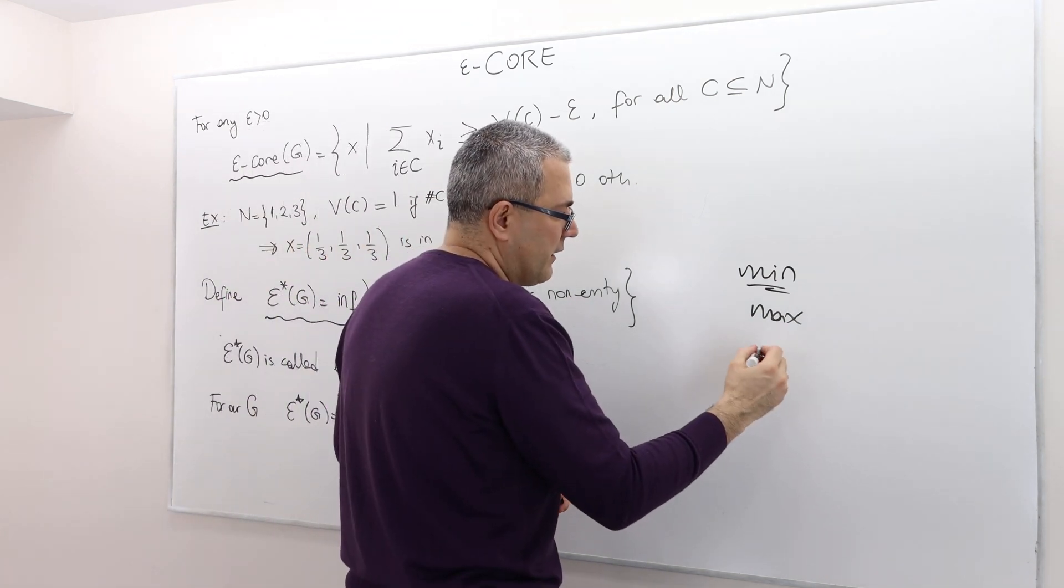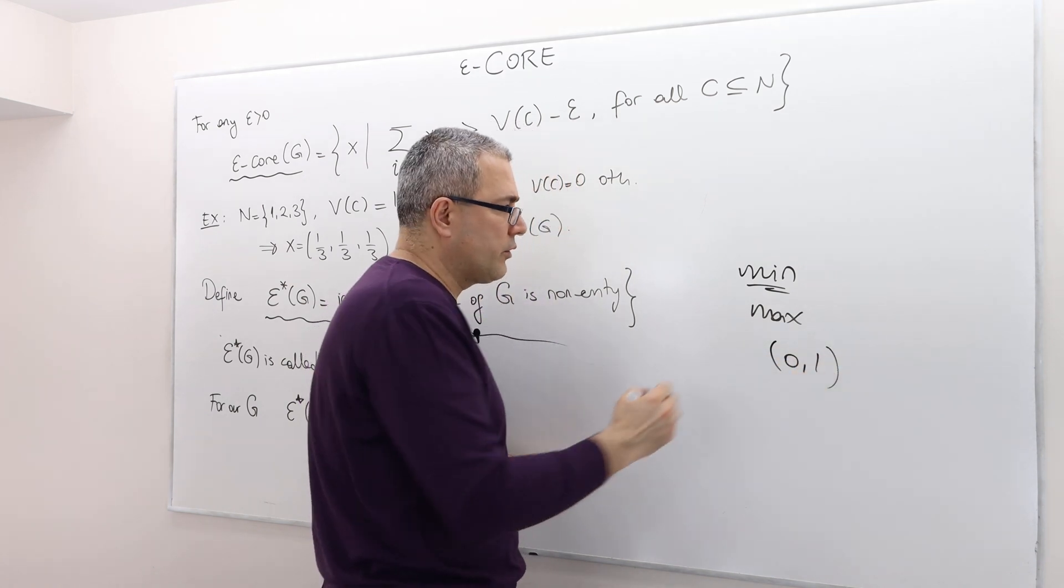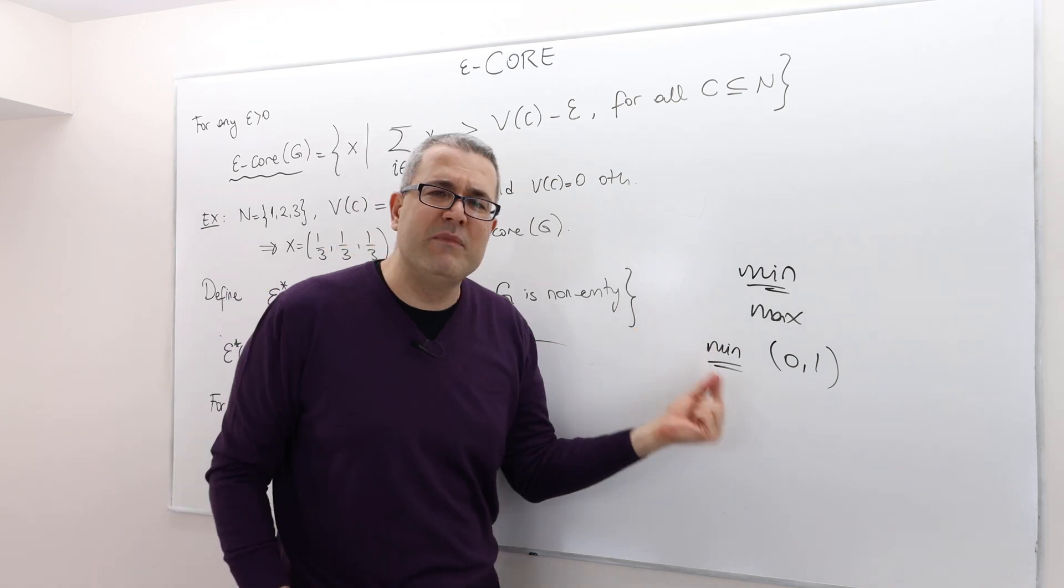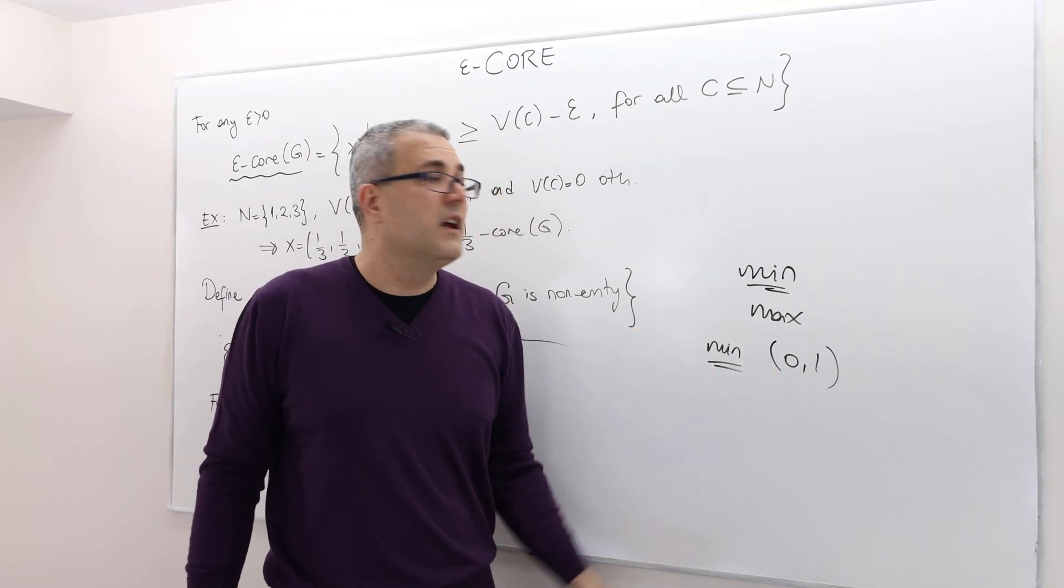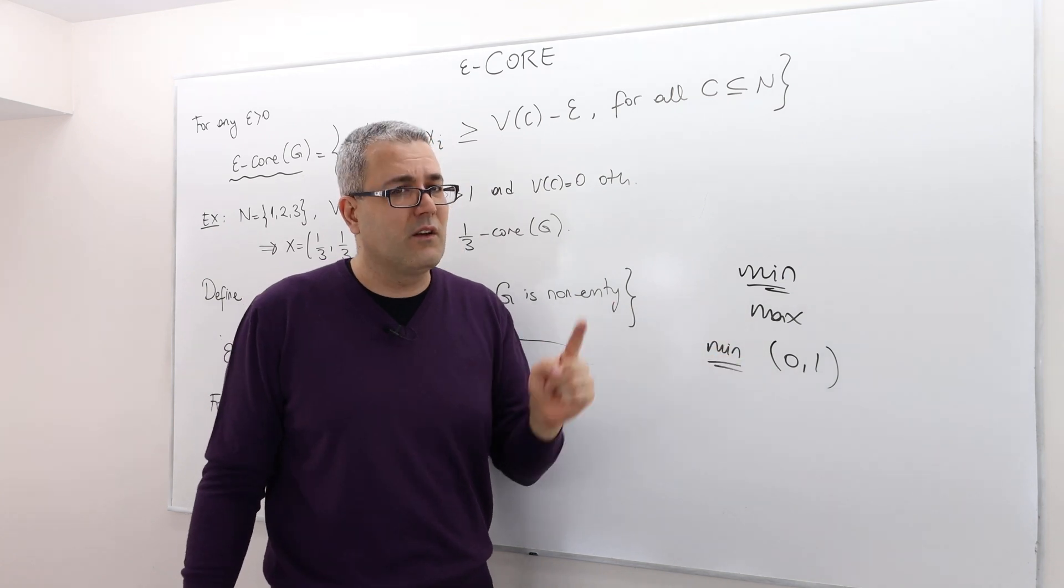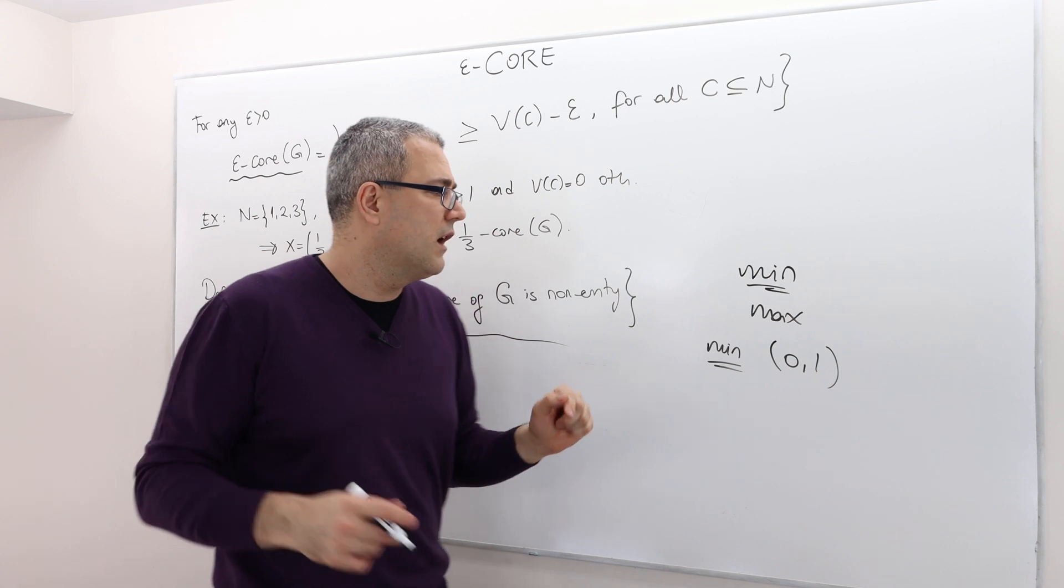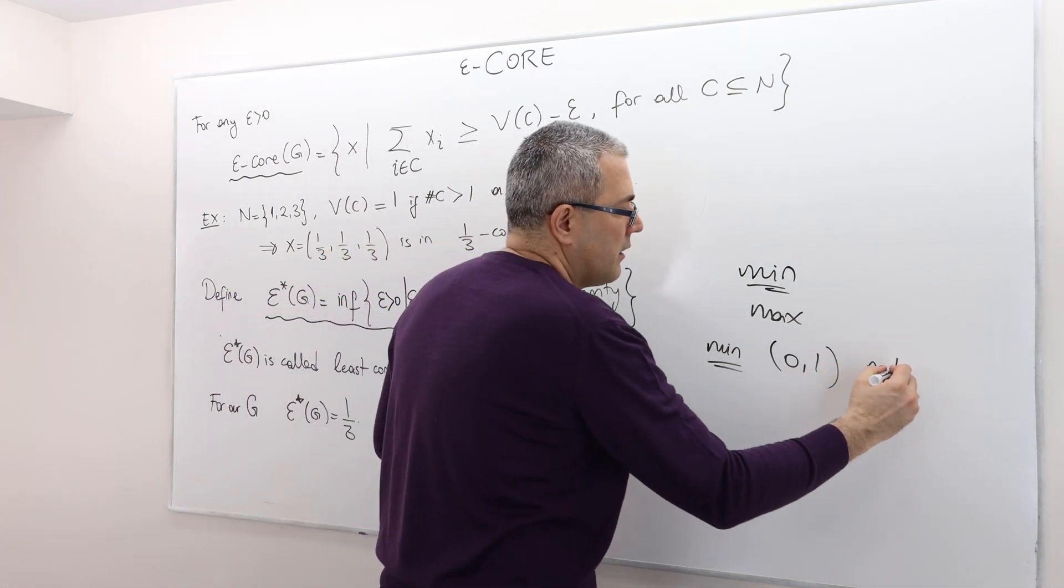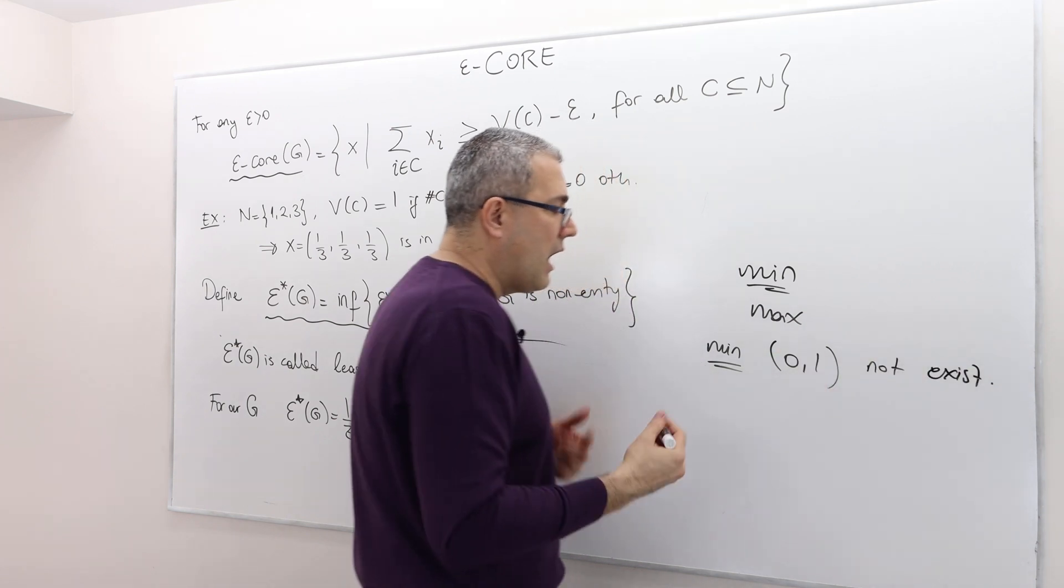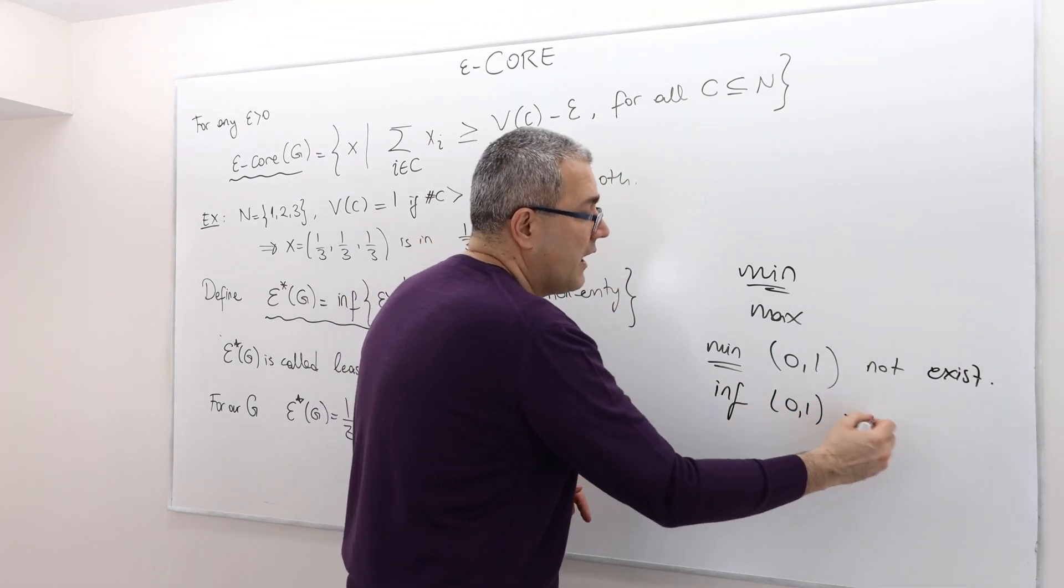For example, if I look at the set 0, 1 open interval, what is the minimum of this set? What is the minimum number in this set? It's not 0, because 0 is not in this set. So minimum of this set is not well-defined. It does not exist. However, in this case, infimum of 0, 1 does exist. And it's 0.